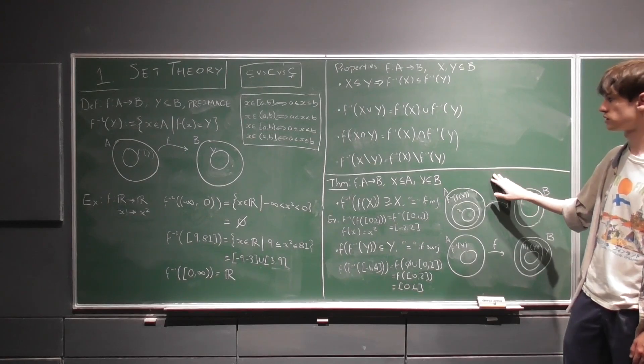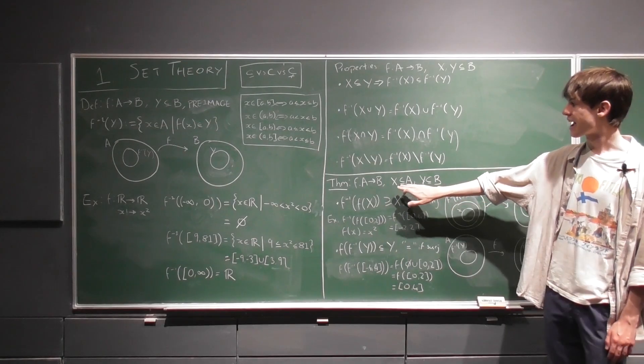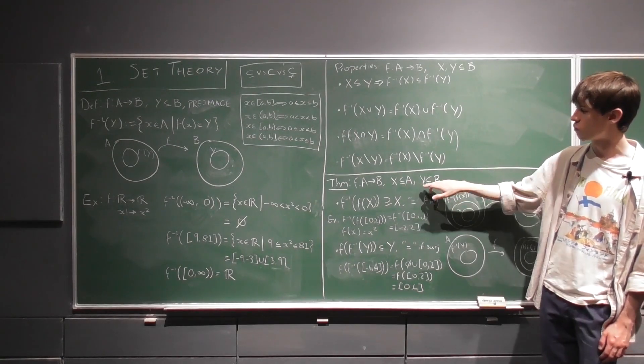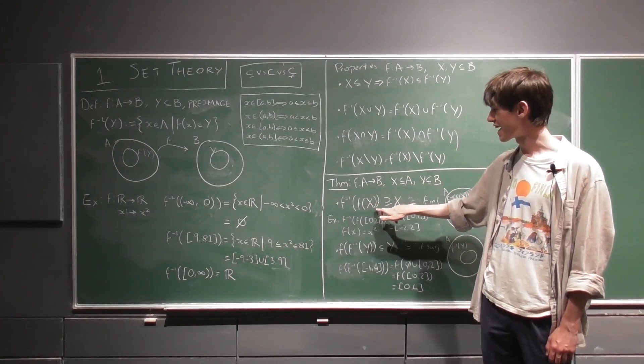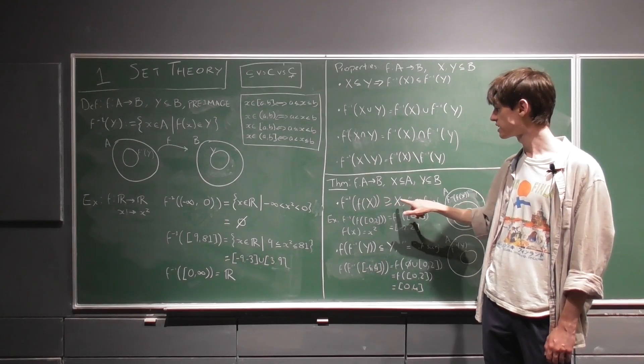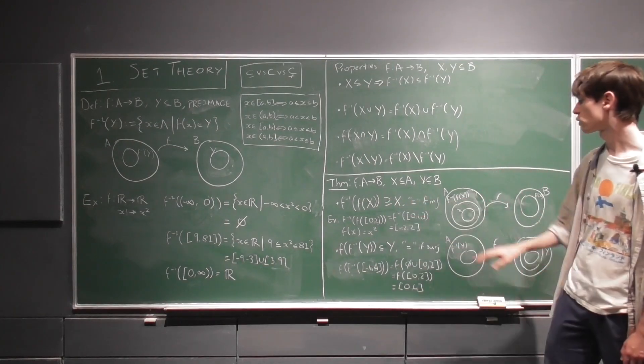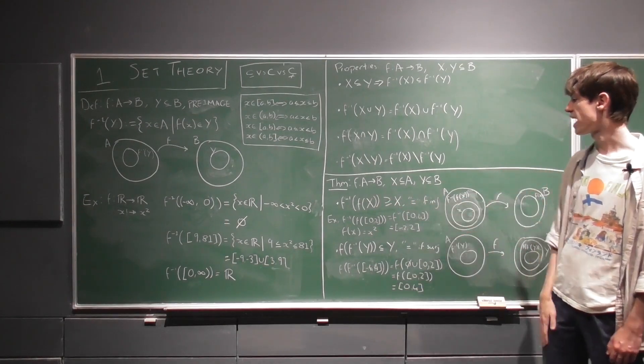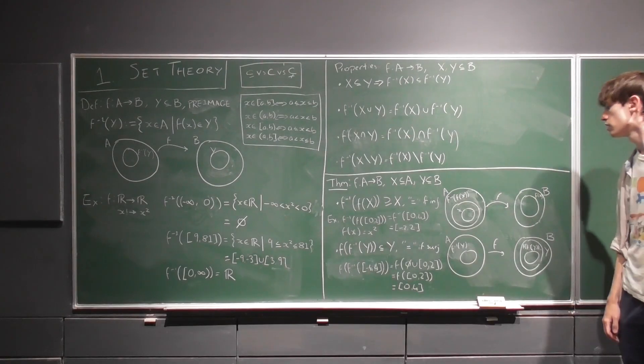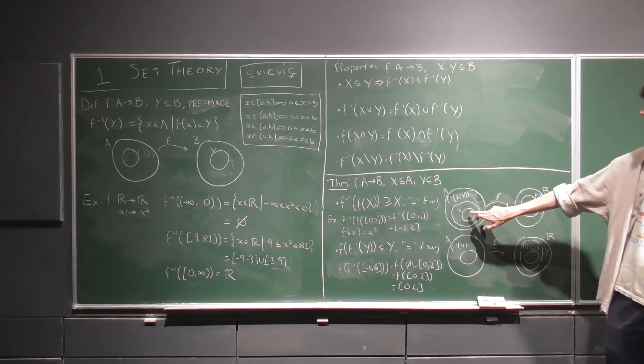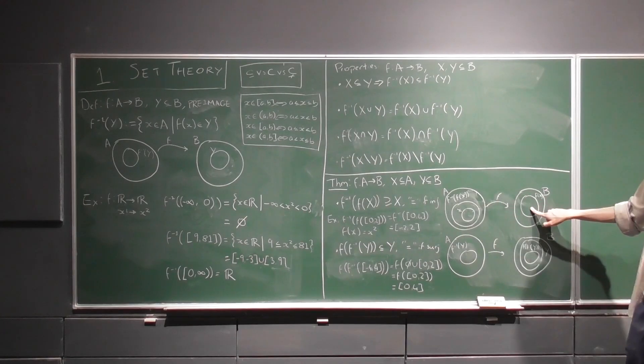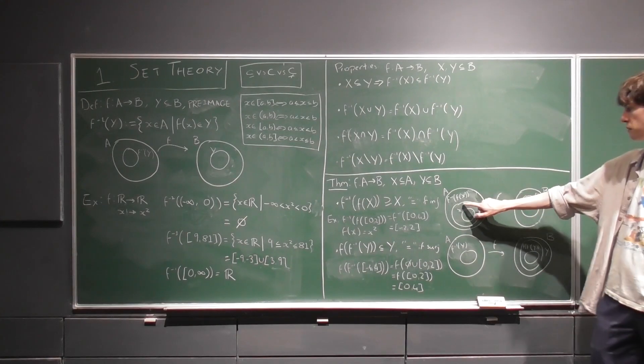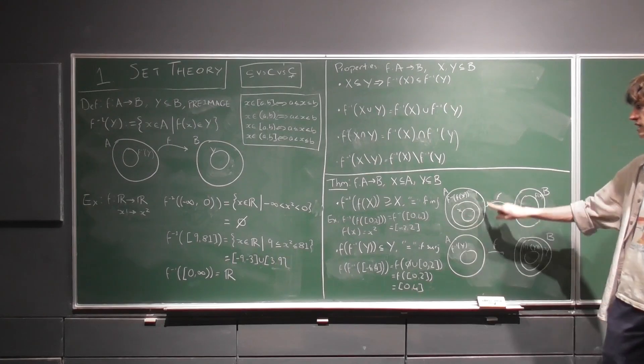A very useful result is here. If we take x to be a subset of a and y to be a subset of b, we can see that, first of all, the pre-image of the image of x is a superset of x and equality will hold if f is injective. So we can see the picture here. If x lives in a, f will bring it to its image and we can look back at its pre-image and that will be some superset of x.